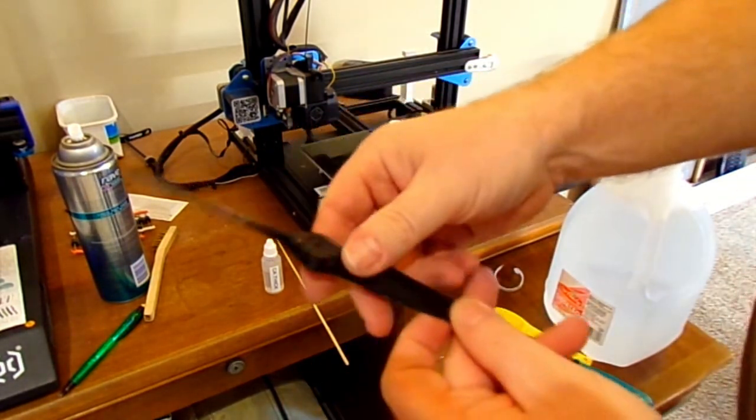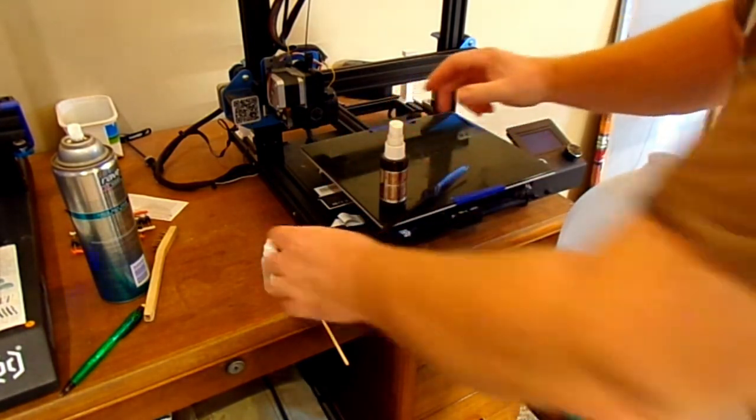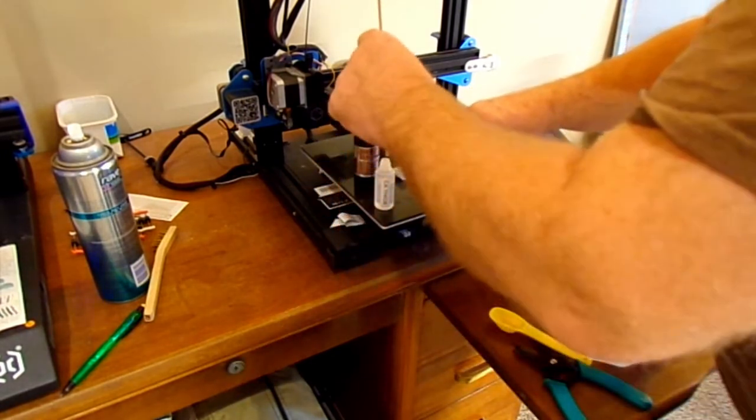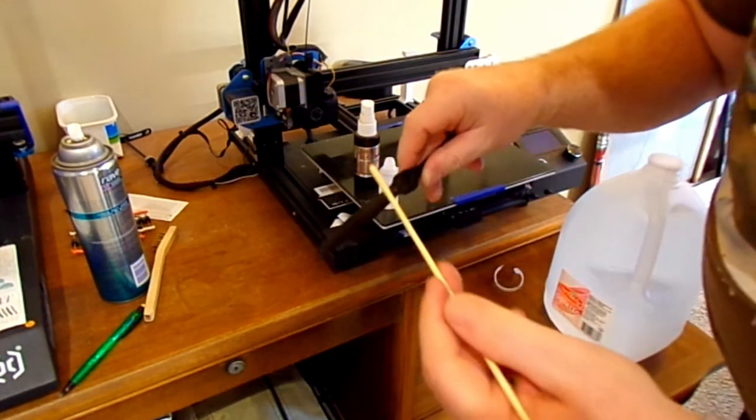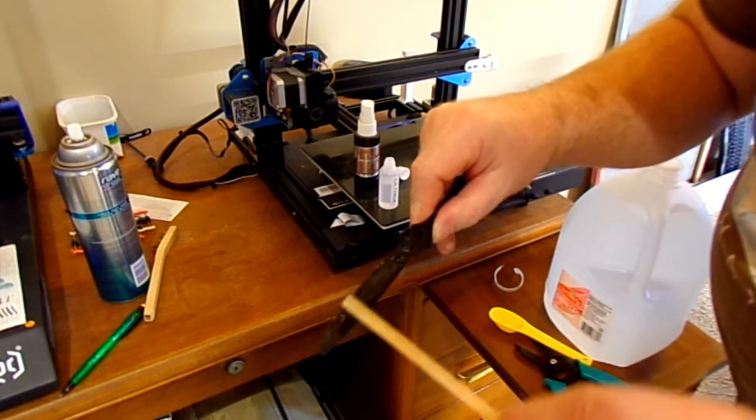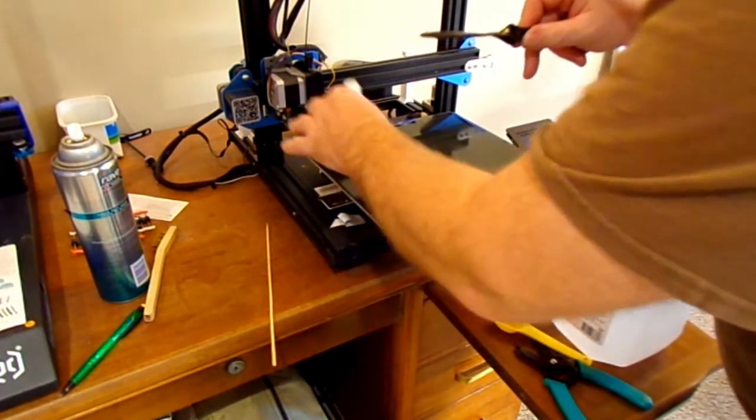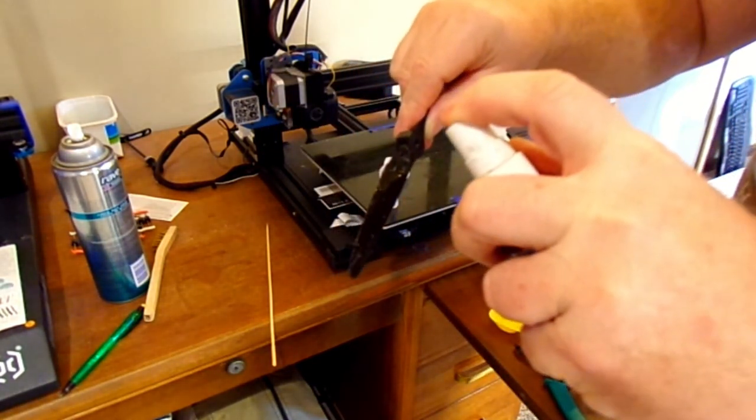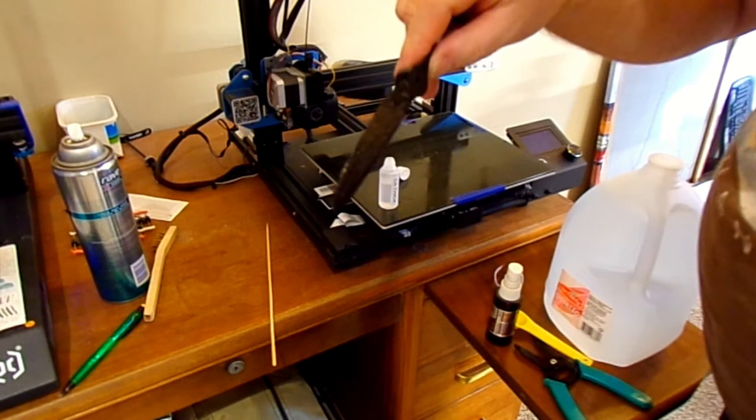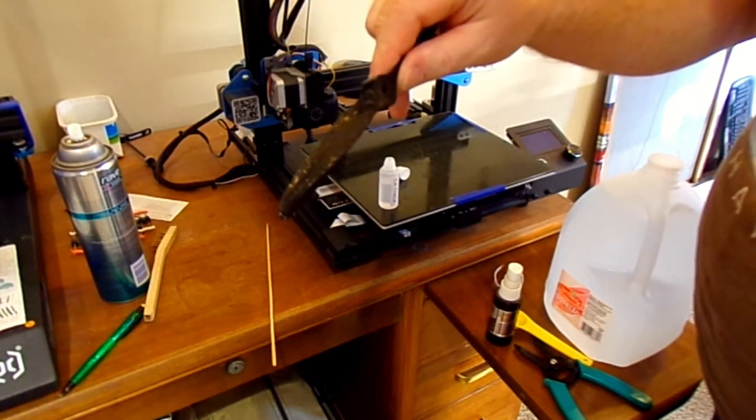Tell you what, we have a propeller here, that's just printed in black PLA. All I want to know is, is it going to set, and will it damage the PLA? That's what I want to know. I wasn't happy with the way this prop turned out anyhow, so we're going to use it as our test dummy. That's a pretty thick coating of CA on that blade there, very thick coating actually.